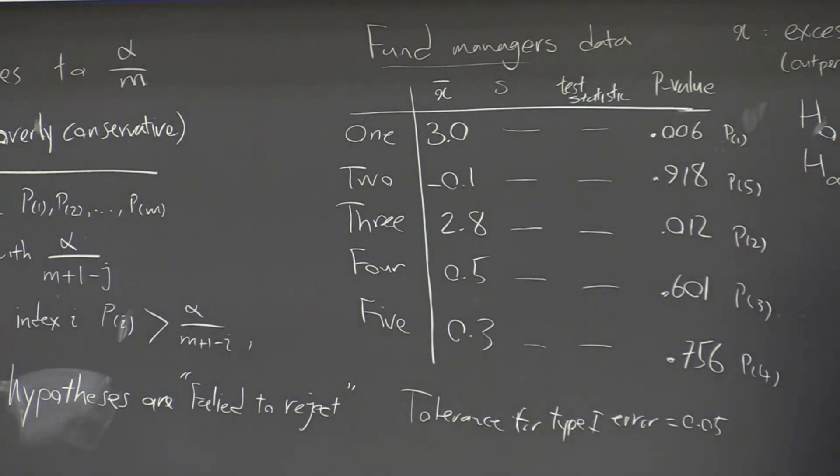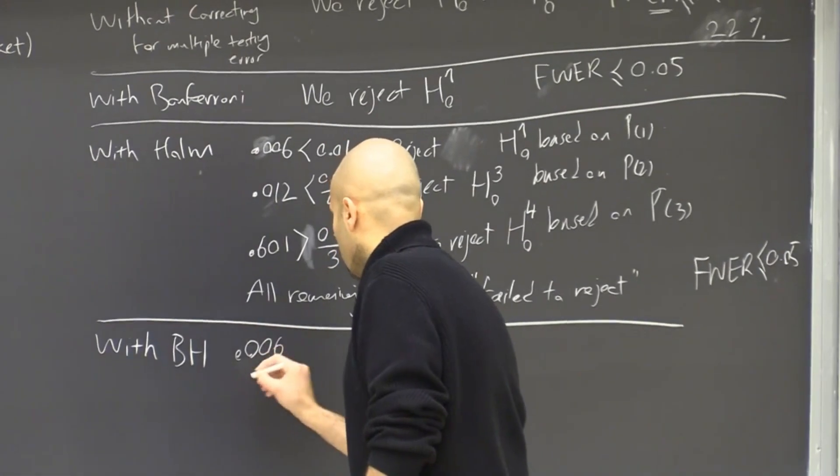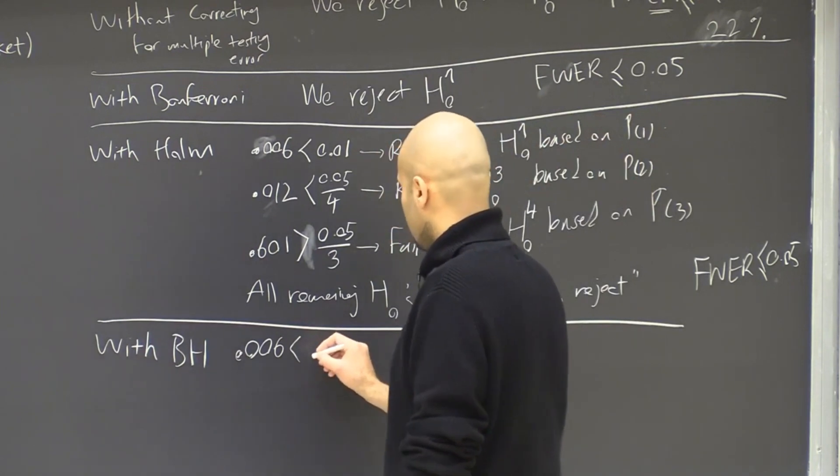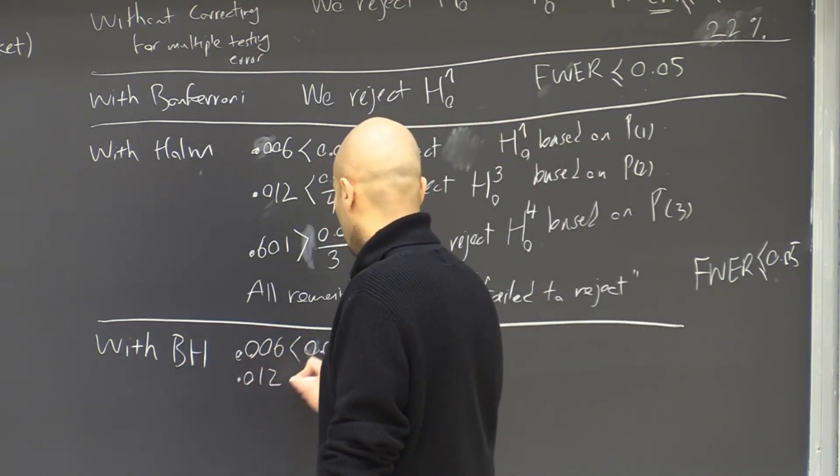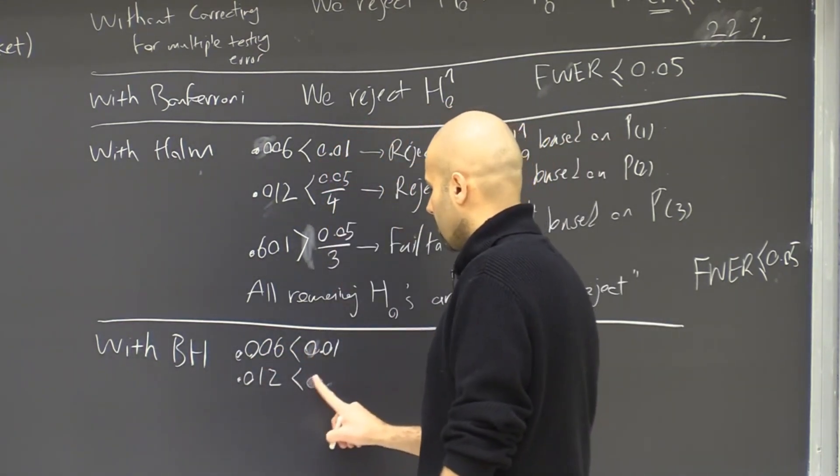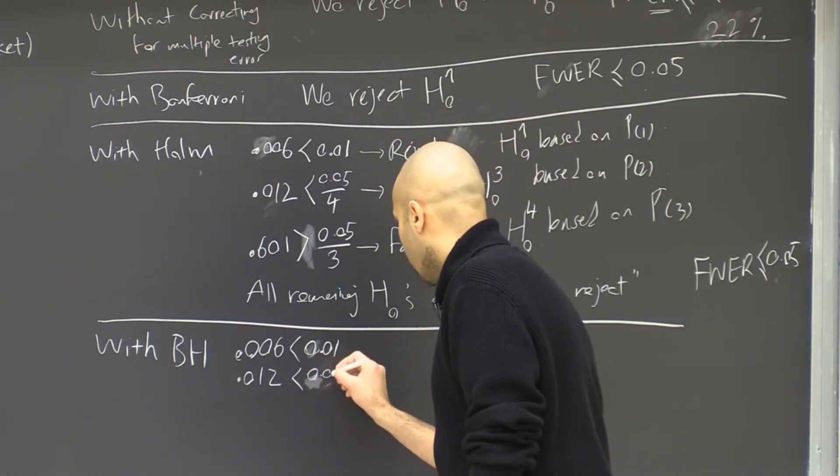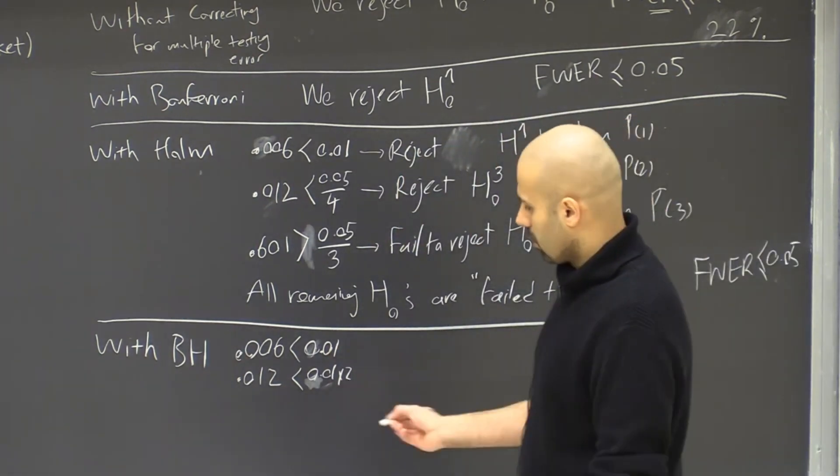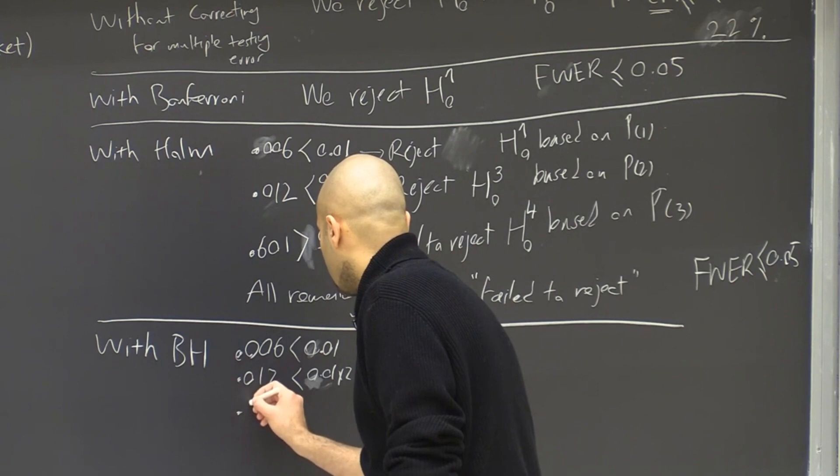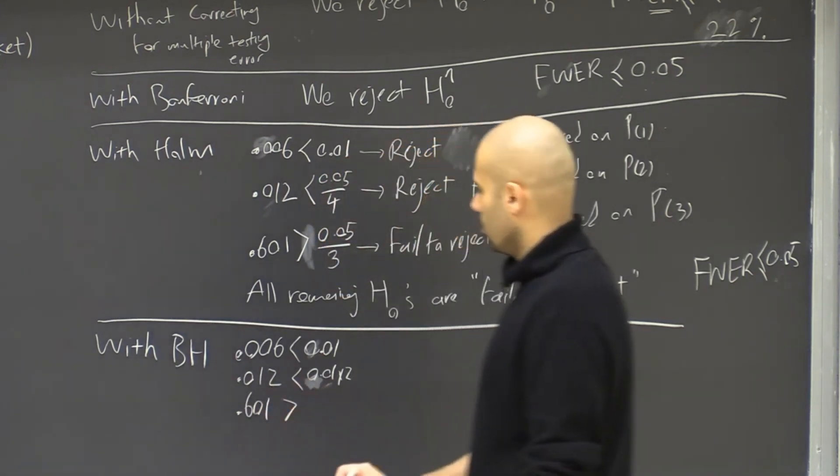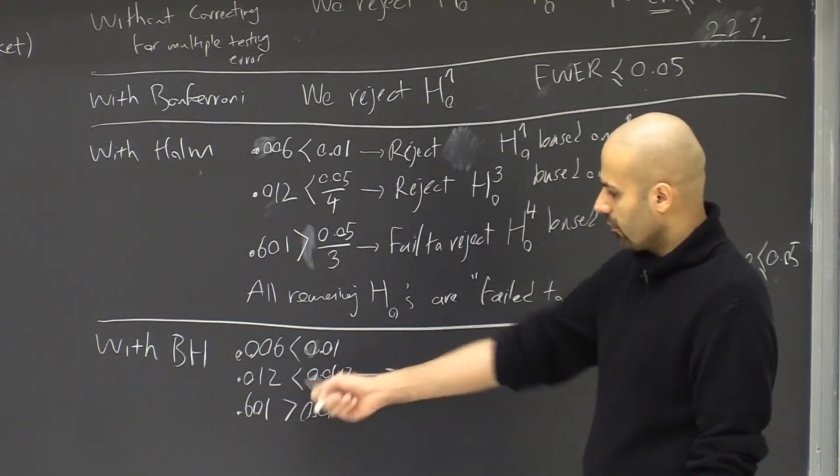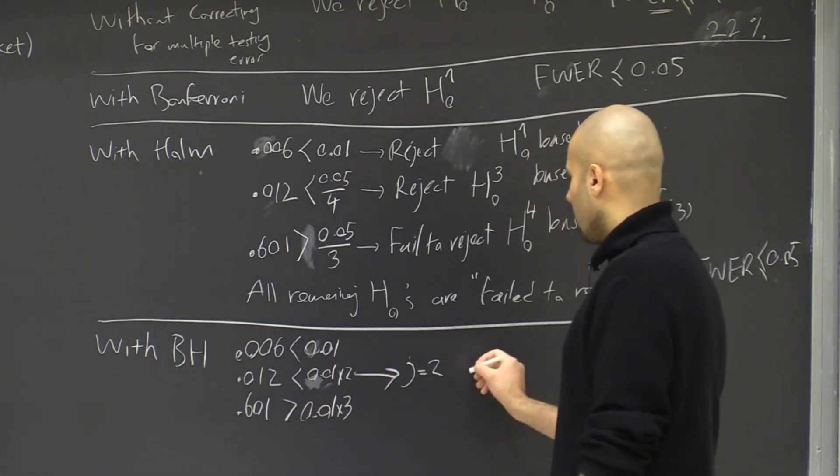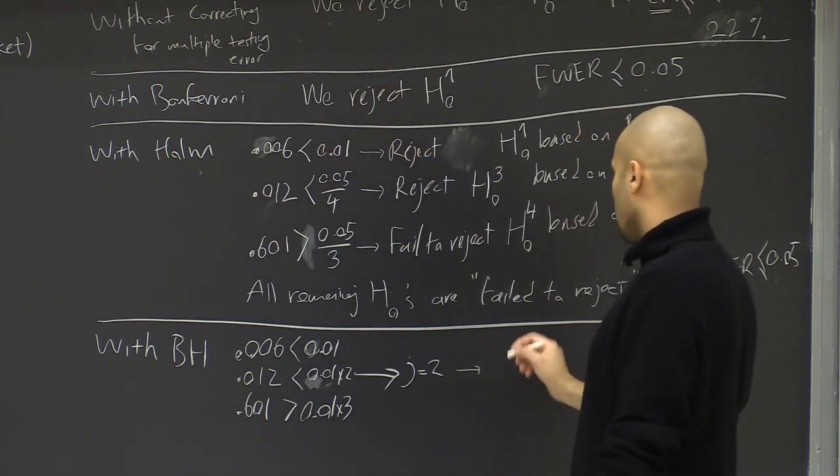So with Benjamini-Hochberg, what happens is that we have the same p-values. So 0.006, we compare it to 1%, and it's smaller. Then the next one is 0.012, we compare it to 5%, we compare it to actually 1% times 2, and it is still smaller. Then the third one is not smaller. The third one is this, we need to compare it to 3%, and it's larger. Therefore the index j, the largest index for which p-value is smaller than the threshold, j is 2. Therefore the outcome is the same as Holm and as having no correction.